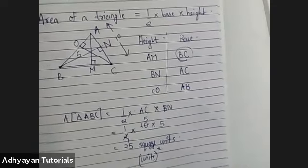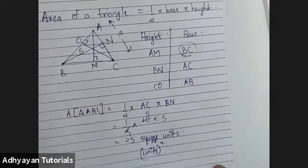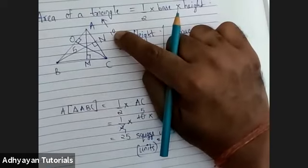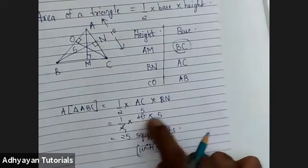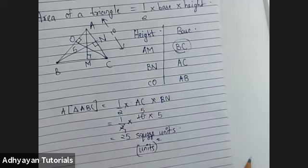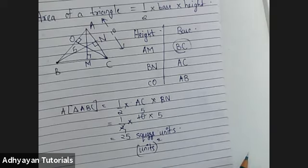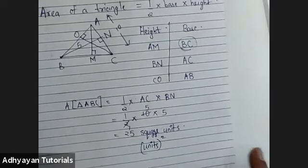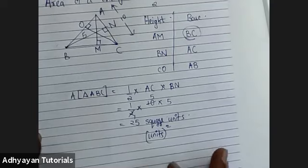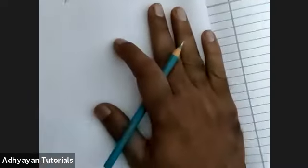Amrita Rao has already finished. Amberlin has requested me to explain the solving part — Amberlin, the solving part is very easy. I've just substituted the values: AC's value is 10, BN's value is 5. So half into 10 into 5 — two ones are two, five fives are 25. The working is very simple. Now there are many more basic parts. Talking about a square — I hope you might have heard about a square.